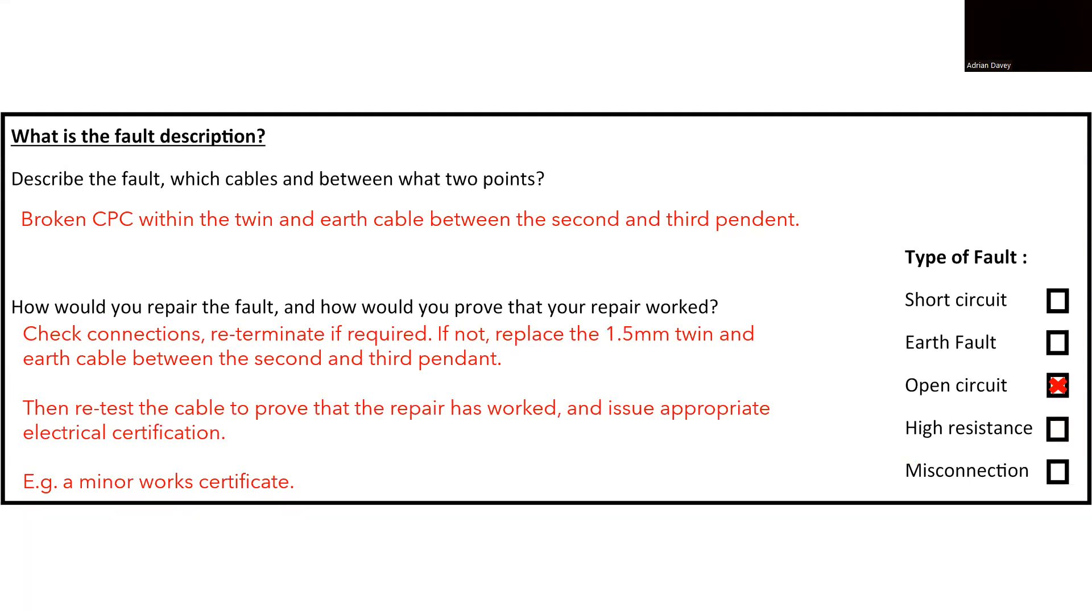In practice, it is essential to conduct thorough checks on connections and re-terminating if required, before concluding that a partial rewire is required. If it is confirmed that the cable was indeed the source of the fault, a cost analysis should be performed to compare the expense of cable replacement with the cost of locating and repairing the break within the building structure. The decision should be based on the available evidence. Once the necessary repairs have been made, it is crucial to conduct retesting to verify the success of the repairs and to ensure that the electrical system is now in compliance with safety standards. Depending on the nature of the repair, it may also be necessary to issue a minor work certificate.